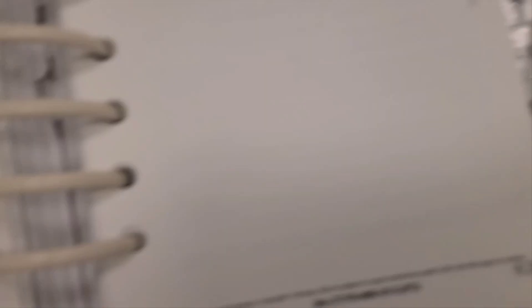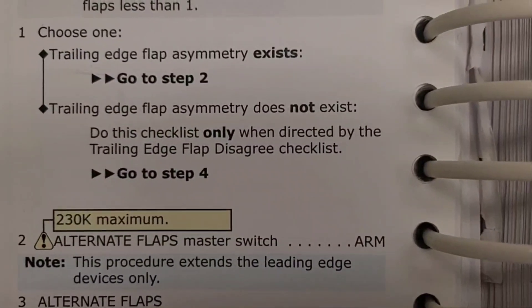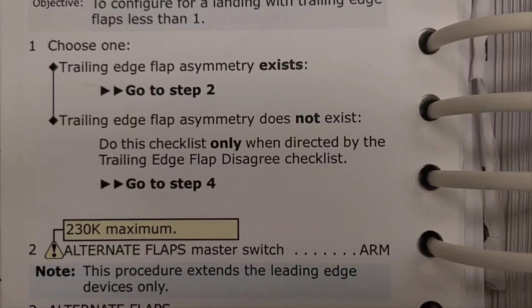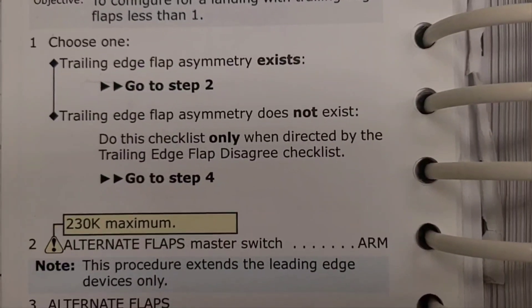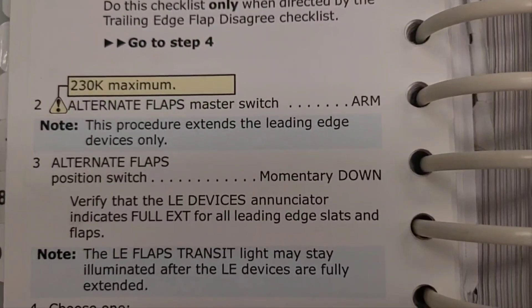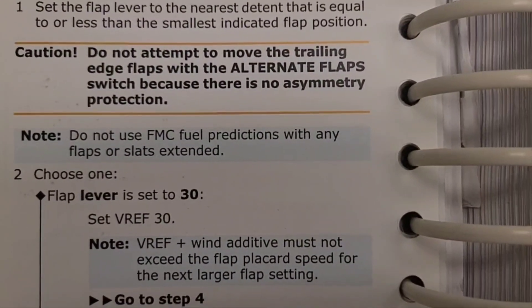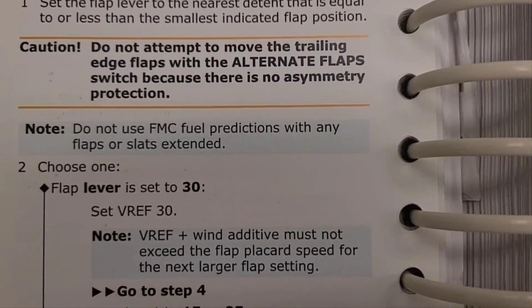Here's your trailing edge flaps up checklist. You'll notice it says: choose one — trailing edge flap asymmetry exists. Yes it does, go to step two. Step two: alternate flaps master switch arm, alternate flaps position switch momentary down. This is interesting because the previous trailing edge flap asymmetry checklist says do not attempt to move the trailing edge flaps with the alternate flap switch because there's no asymmetry protection. So what's the story?